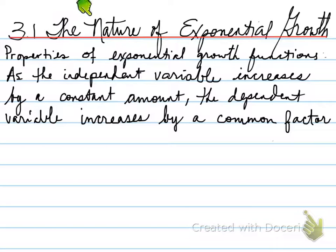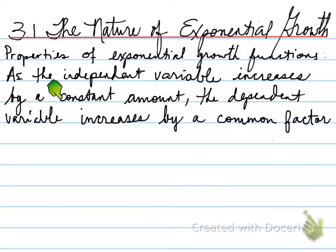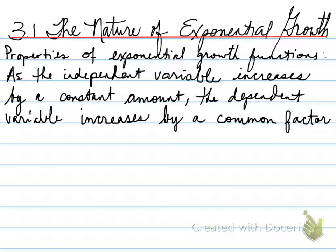What we're looking at here is 3.1, the nature of exponential growth. Properties of exponential growth functions include: as the independent variable increases by a constant amount, the dependent variable increases by a common factor. We're going to look at examples in exponentials with respect to a table and a graph. When we look at a growth function, as x increases moving left to right, the y values increase by a common factor.